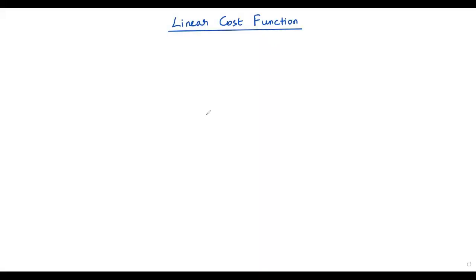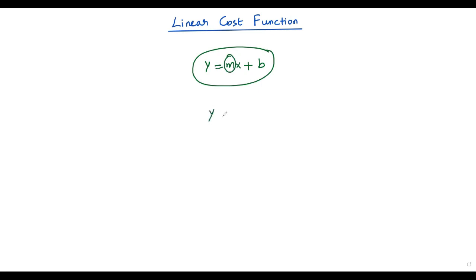In this video we're going to talk about linear cost function. A linear cost function is nothing but the slope-intercept form equation of a line: y = mx + b. Since this is a linear equation, we consider it a linear cost function. Instead of the slope m we use uppercase A, and instead of the y-intercept b we use uppercase B. So y = Ax + B is the linear cost function.